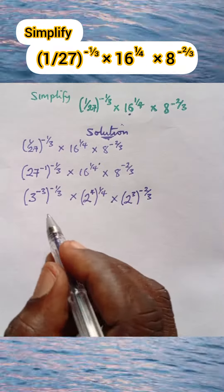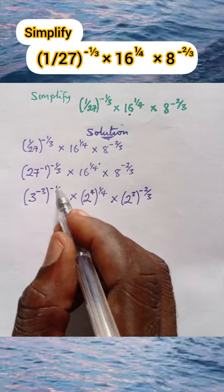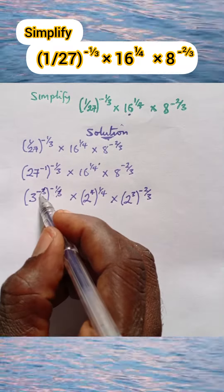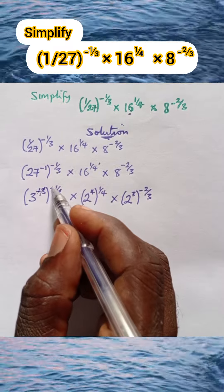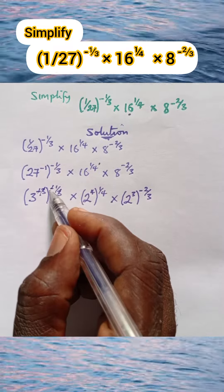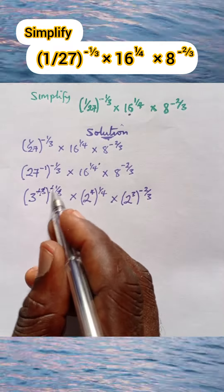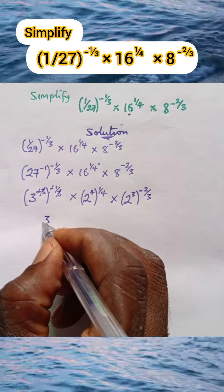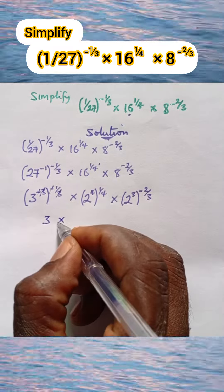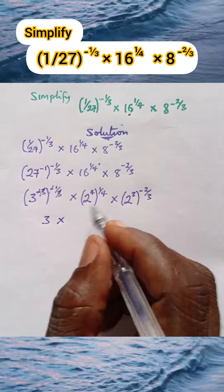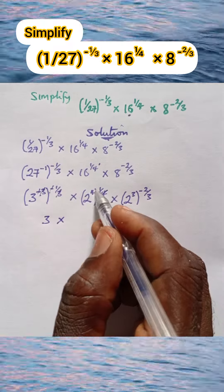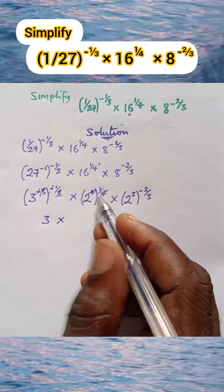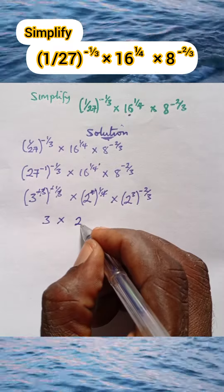So now we are going to multiply the exponents. We can come here and cancel the 3s — this negative sign cancels this negative sign, and we are left with 3 raised to the power of 1, which is the same thing as 3. Multiply by similarly, 4 cancels 4, and we are left with 2 raised to the power of 1, which is the same thing as 2.